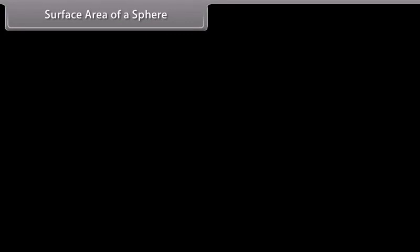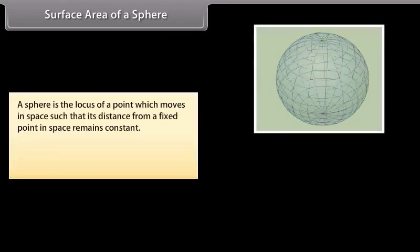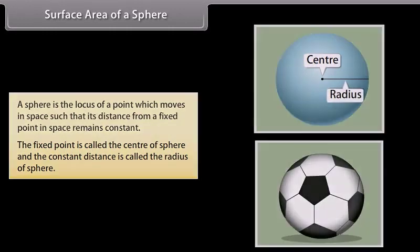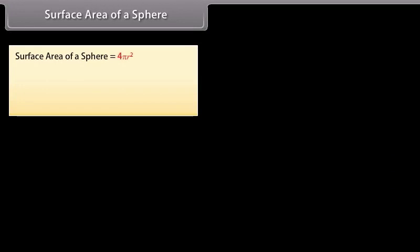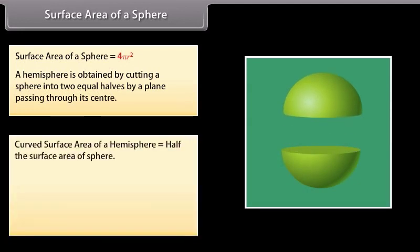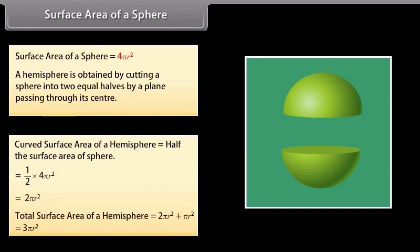A sphere is the locus of a point which moves in space such that its distance from a fixed point remains constant. The fixed point is called the center of the sphere and the constant distance is the radius. A sphere is like the surface of a ball. The surface area of a sphere is equal to 4πr². A hemisphere is obtained by cutting a sphere into two equal halves. The curved surface area of a hemisphere is 2πr², and the total surface area of a hemisphere is 3πr².